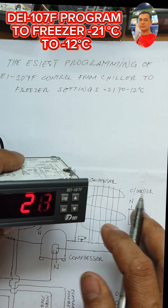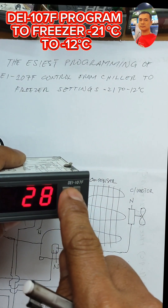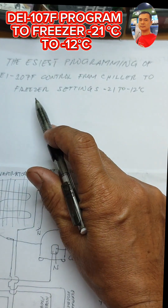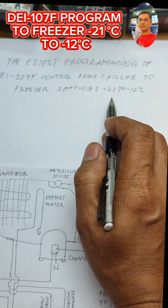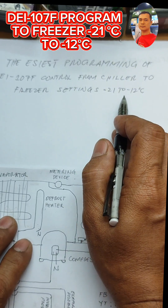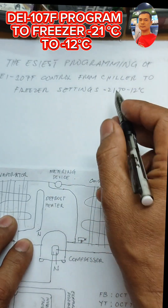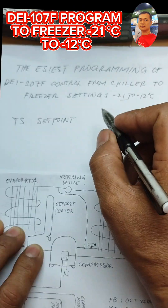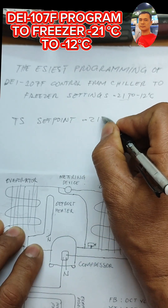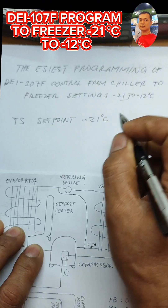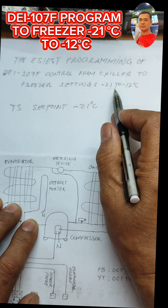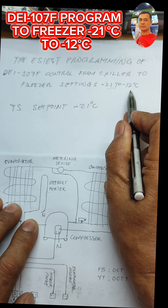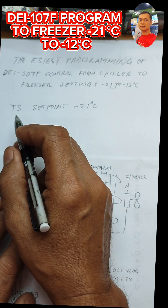Welcome. Today we're going to program this DEI 107F from chiller to freezer. Our setting is 21 degrees Celsius to 12 degrees Celsius. Therefore the lowest set point is negative 21 degrees Celsius, and if you subtract 21 from 12 that will be nine degrees Celsius.